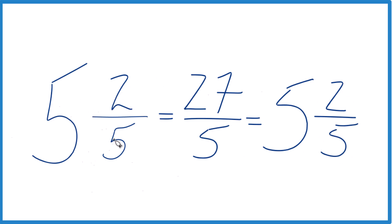And these are equivalent numbers, 5 and 2 fifths, that is the same value as 27 fifths. It's just, this is the improper fraction, and this is the mixed number here for 5 and 2 fifths.